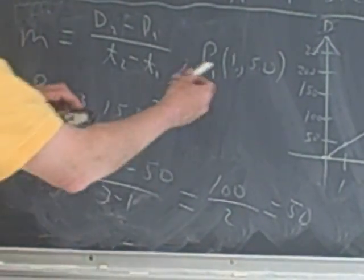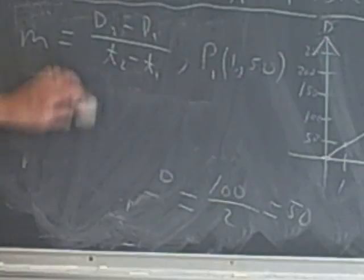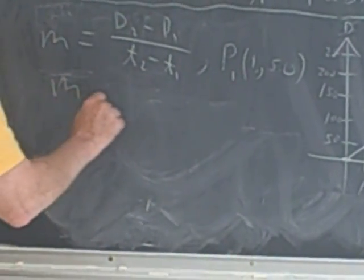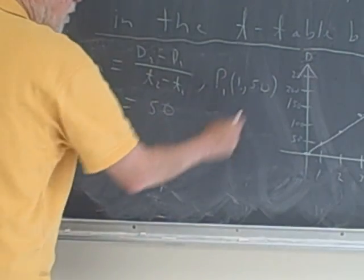Now, I'll just remember that. I'll give myself some room here. I'll get rid of these points, and I'll put the fact that I have a slope equals 50. I do have one point.